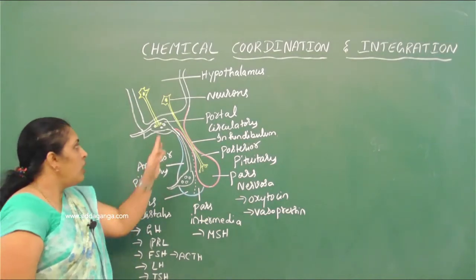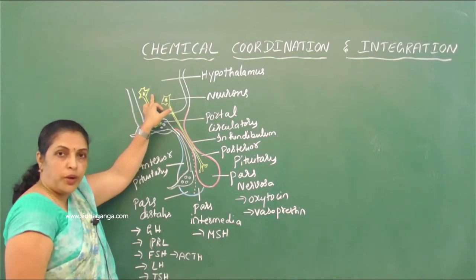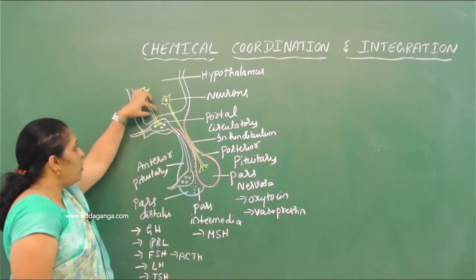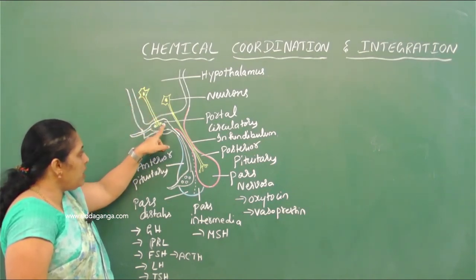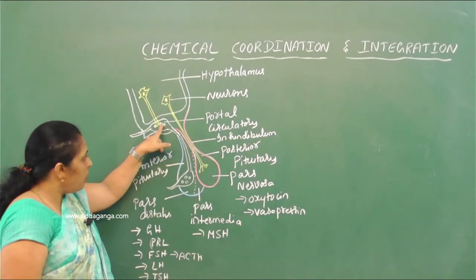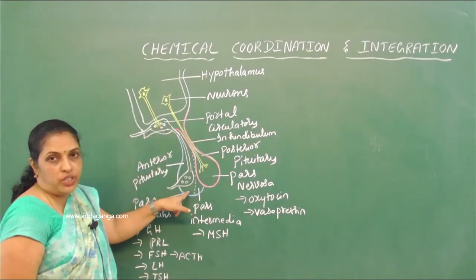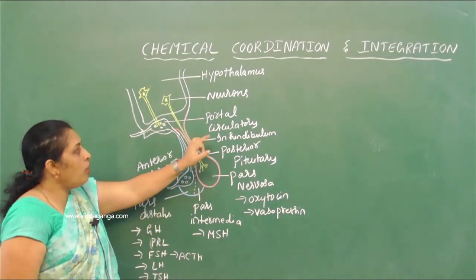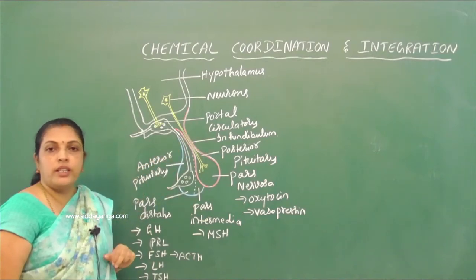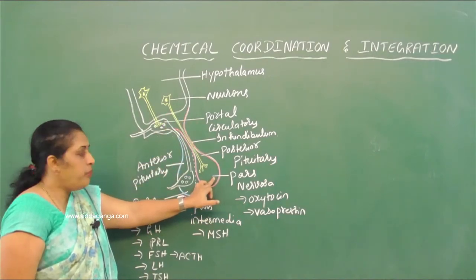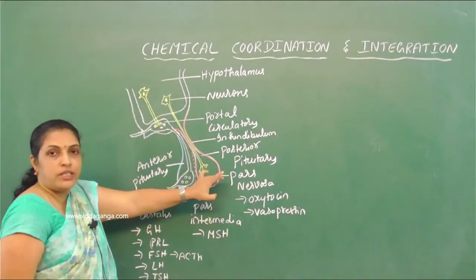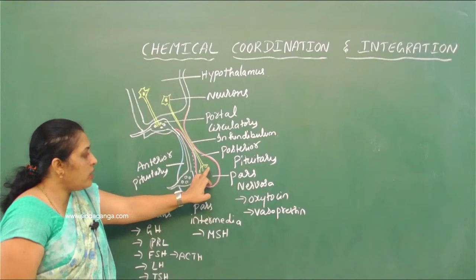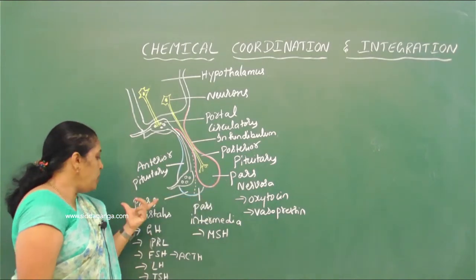Totally nine hormones are released by the pituitary gland. The hypothalamic neurons produce hormones and regulate the function of the pituitary gland. Some hormones released by the hypothalamic neurons are released into the circulatory system and reach the anterior pituitary gland through the portal circulatory system. However, in the posterior pituitary gland, there is a direct connection between the hypothalamus and the posterior pituitary gland — the hormones are released directly into pars nervosa.